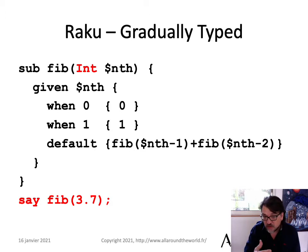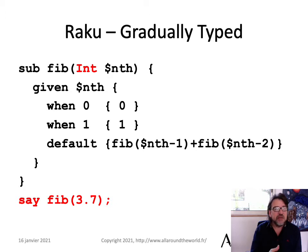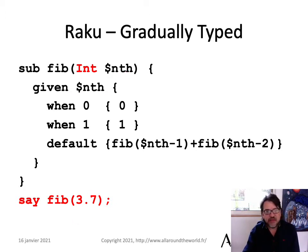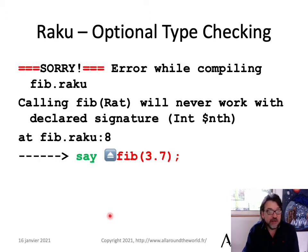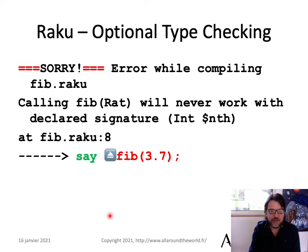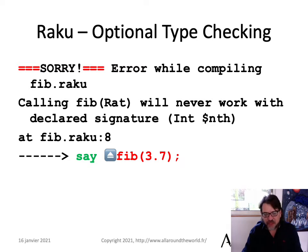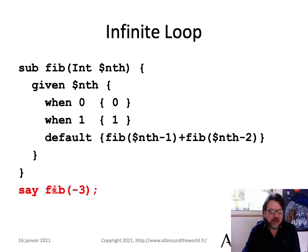What we can do to fix that is use gradual typing in Raku. We can slap an `Int` on the parameter: `sub fib(Int $nth)`. Now this is going to throw an error — and it's going to throw it while compiling in this particular case, because Raku will see at compile time that passing 3.7 will never work with the declared signature `Int $nth`. That's lovely. In certain cases you can get compile-time type failures with Raku.